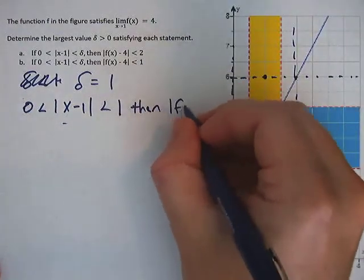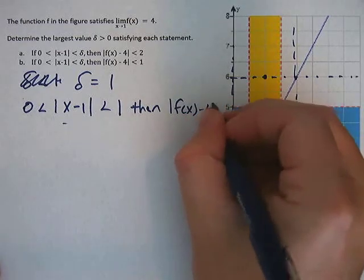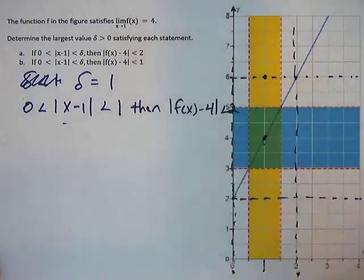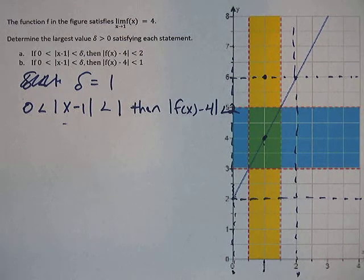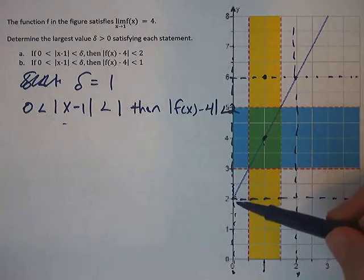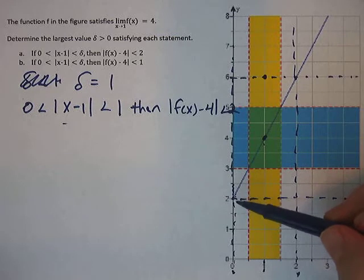Then absolute value of f of x minus 4 is less than 2. Now, I'm going to repeat this, except I'm going to do it with the actual function instead of the graph to kind of correlate the two in your minds. So what is this function?